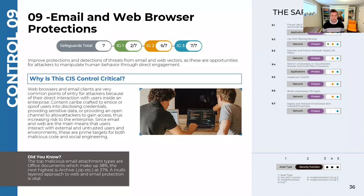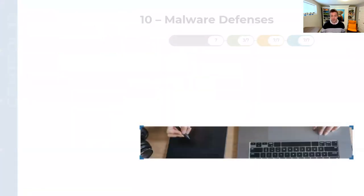9.6 is blocking unnecessary file types — something we have already accomplished for many of our clients using group policies and the endpoint security solutions we have. 9.7 is very specific because it specifically talks about protecting your email server, which the large majority of businesses no longer host themselves.